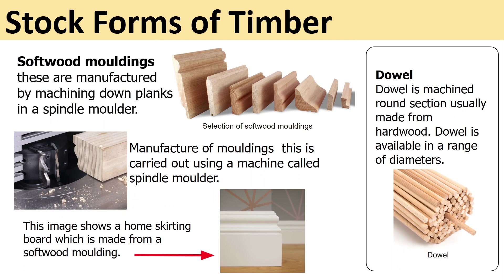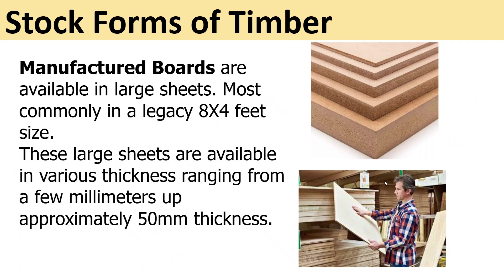Softwood moldings are manufactured using a machine called a spindle molder, which has a shaped cutter that cuts the shape into the timber. There is a selection of softwood moldings — for example, the skirting board you might see in some houses. Dowel is usually machined from hardwood and is available in a range of diameters.